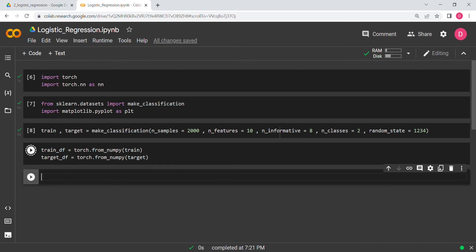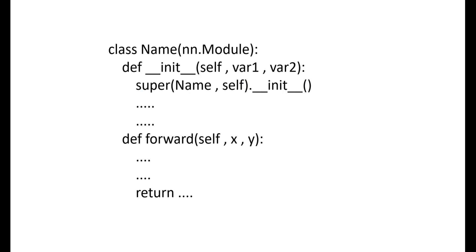There's one more thing I need to explain, and this is going to be new. Let's go back to the slides. What you're seeing here is the basic way a model is defined in PyTorch — it doesn't matter what kind of model it is. It has a fixed structure. First you write the class keyword and then the class name. In our case we'll use LR for logistic regression, though you can use anything.